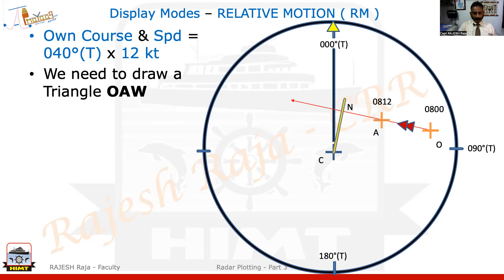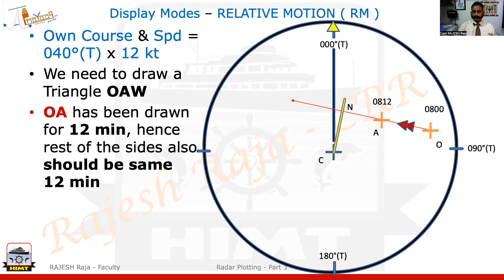A small principle of the triangle: it doesn't matter in plotting or chart work — if I assign one side of the triangle for a particular number of minutes, you need to maintain the same for all sides. That is a rule you must follow; otherwise your triangle is wrong and the data you get is wrong. I already have the question for 12 minutes for OA, so my RML is for 12 minutes, and all sides should also be for 12 minutes.